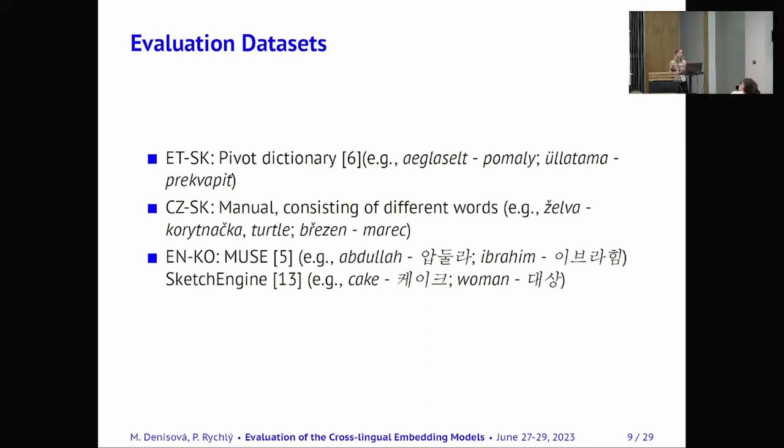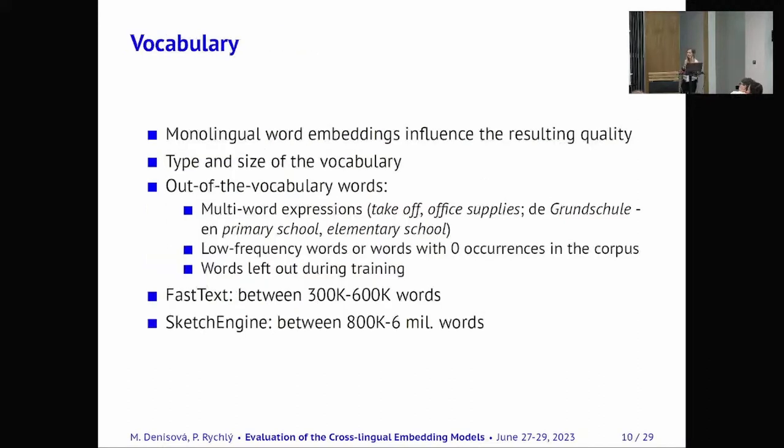Evaluation datasets were compiled in a similar manner to the seed lexicon. What is important is that, for example, Czech and Slovak was otherwise compiled from different words that are different in both languages. And also important to mention that English and Korean we use two types of datasets because MUSE are being criticized in previous papers that they contain a lot of proper nouns. So we also used the other one that was provided by Sketch Engine. And this one was I think manually post-processed and it contained more basic vocabulary words such as women.